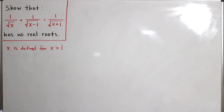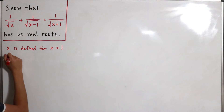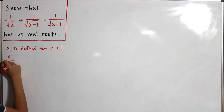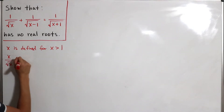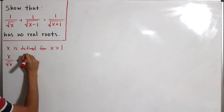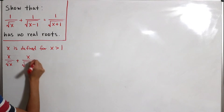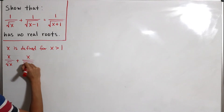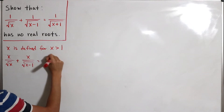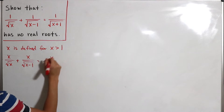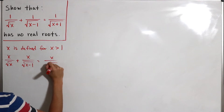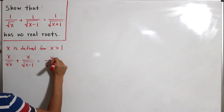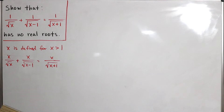Let's do a simplification. First, multiply x to both sides of the equation, giving us x divided by the square root of x, plus x divided by the square root of x minus 1, set equal to x divided by the square root of x plus 1.